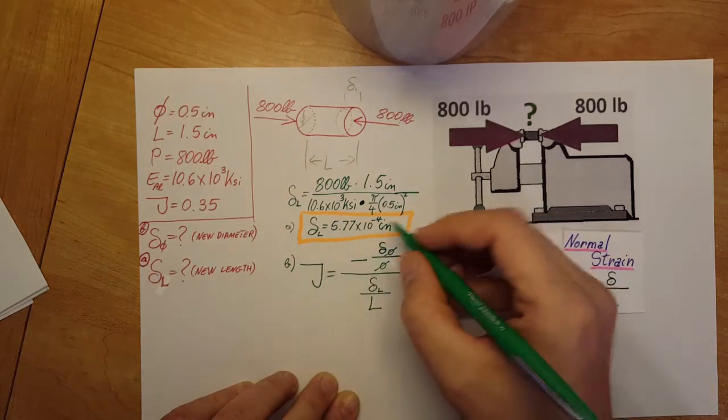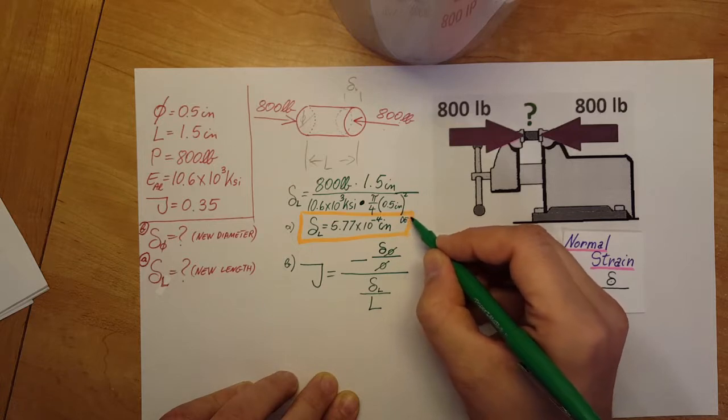Over here in part A I should either put a negative, or at the end we could say that this is a decrease in length, just to be sure that we are accurate with our explanation.